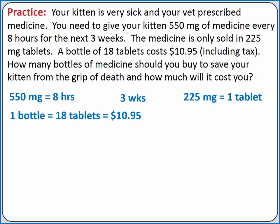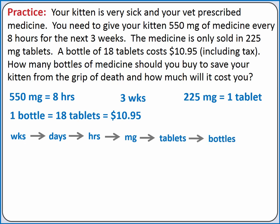None of our conversion factors have weeks in them, but one does have hours. So we can convert our weeks into days and then days into hours. Then we can convert from hours to milligrams of medicine using 550 milligrams equals 8 hours. Our other conversion factor with milligrams will let us convert from milligrams to tablets, and our last conversion factor will allow us to convert from tablets to bottles and bottles to dollars.